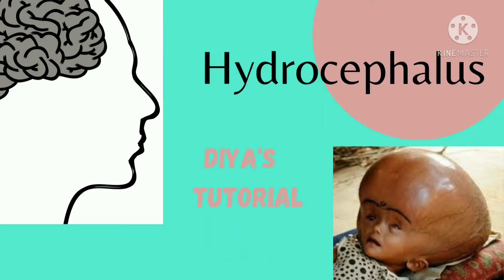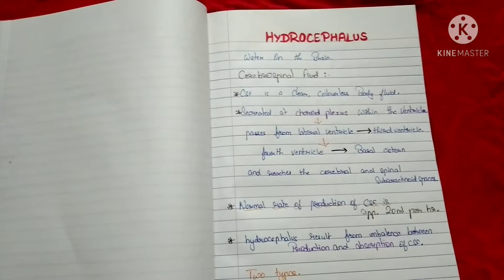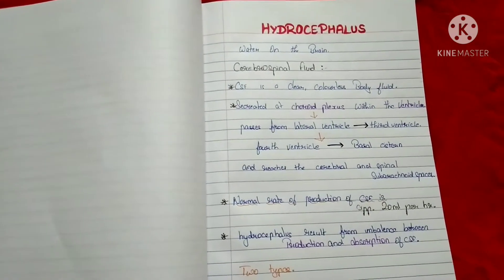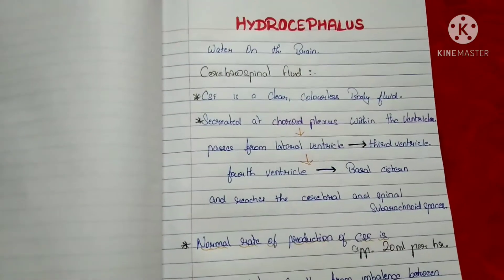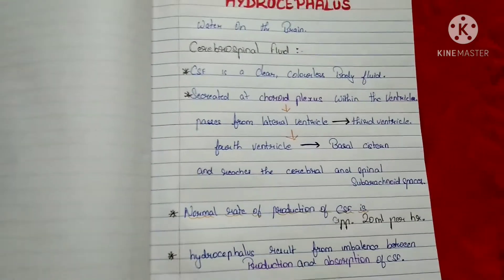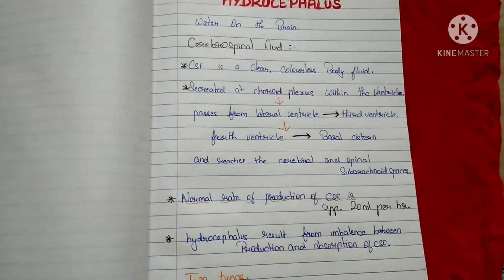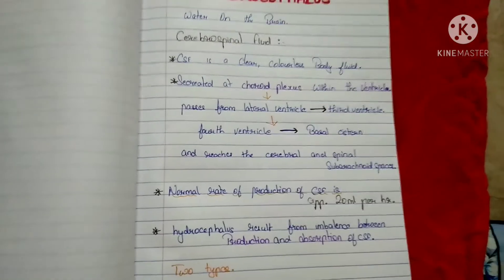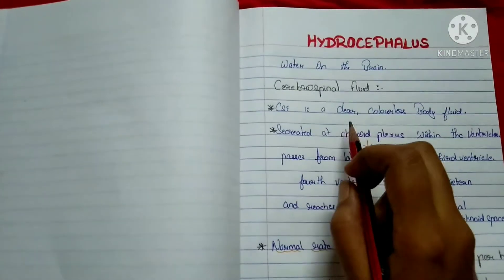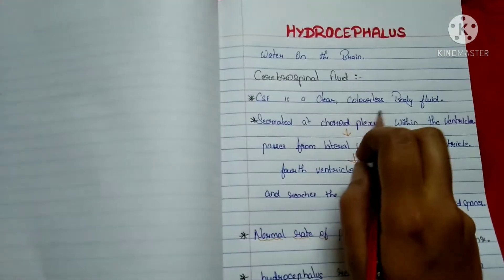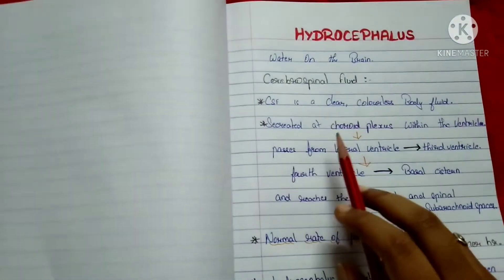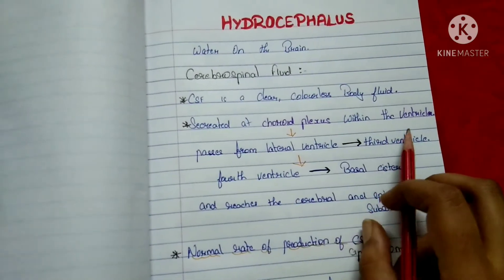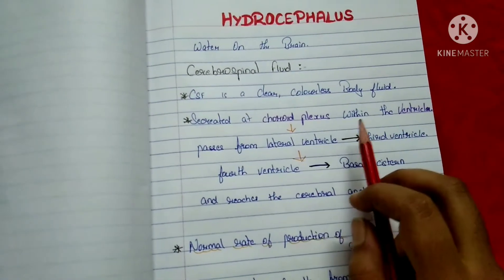Welcome to this tutorial. In this video we will see in detail about hydrocephalus. From the name itself we can understand: 'hydro' means water, 'cephalus' represents brain — so water on the brain. The water here is represented as the cerebrospinal fluid, which is a colorless and clear body fluid secreted at the choroid plexus. The choroid plexus produces the CSF within the ventricles.